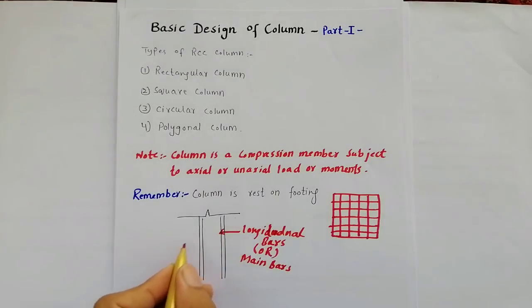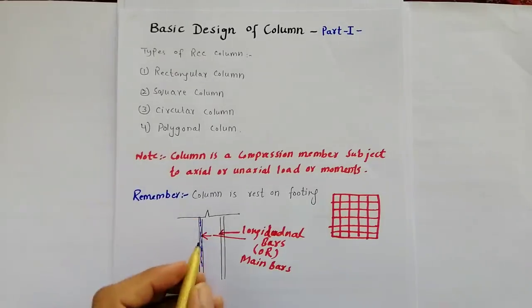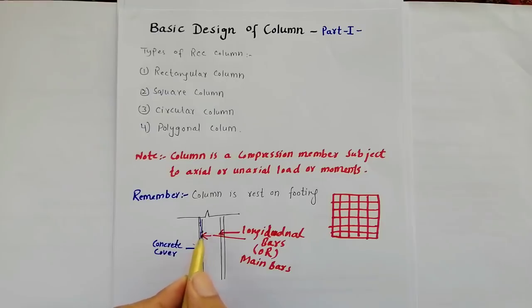These are called longitudinal bars. This bar is the longitudinal bar or main bar. This is also longitudinal bar or main bar. Now this is called concrete cover. Concrete cover protects the longitudinal bars from rust.